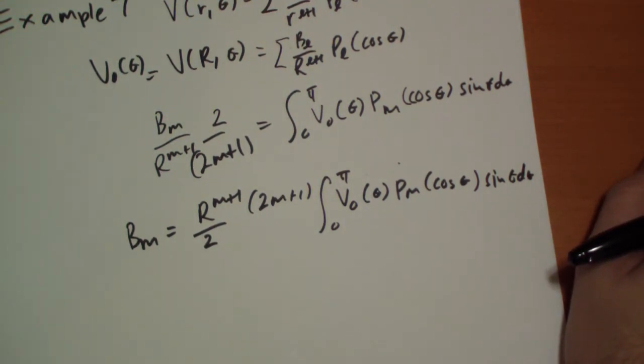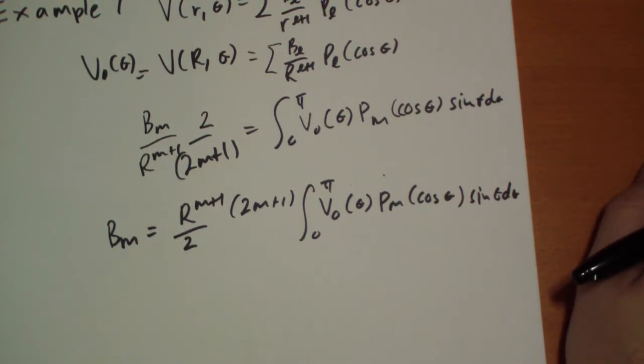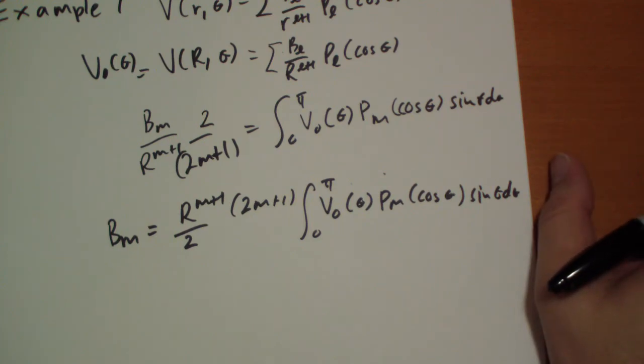OK. And that's it. He doesn't actually give us an example V_0 to solve. So we're done.